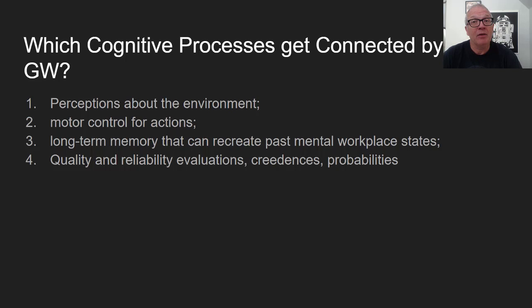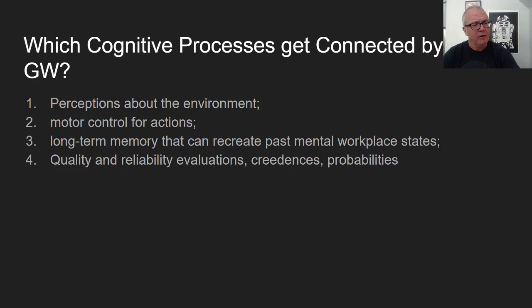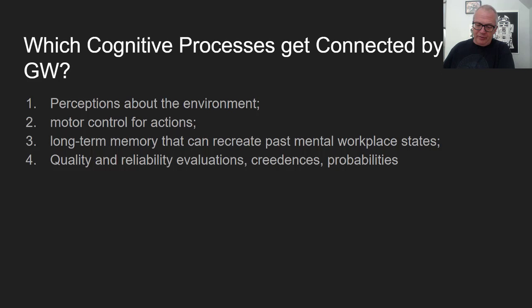Which cognitive processes get connected by the global workspace? Perceptions about the environment get low-level processed and can be boosted into conscious availability. Motor control, long-term memory, and quality and reliability evaluations — credences or probabilities — allow metacognitive judgments about current contents. For example, meeting someone and feeling suspicious, then reflecting on why you feel that way, is a metacognitive judgment layered on a low-level emotional reaction.